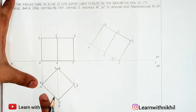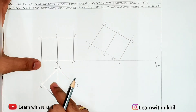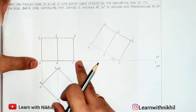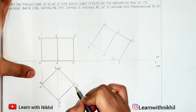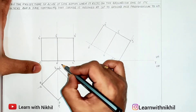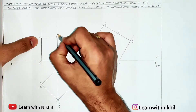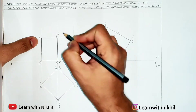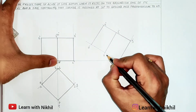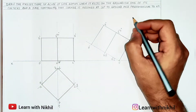The bottom corners are A, B, C, D and the upper corners are E, F, G, H. In the front view, B-dash and D-dash will also be here on the other side, as will F-dash and H-dash. So D-dash is here and H-dash is here as well.